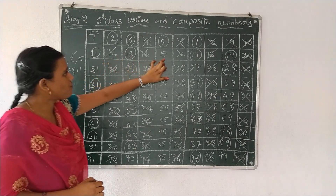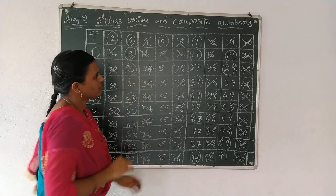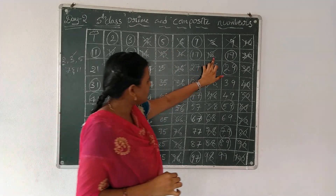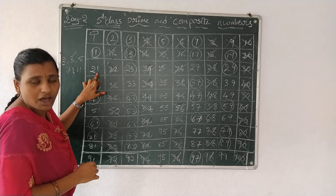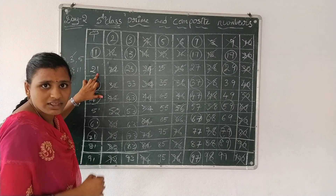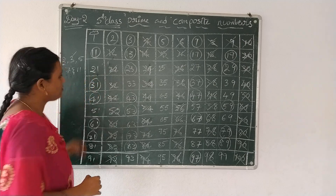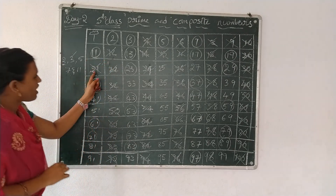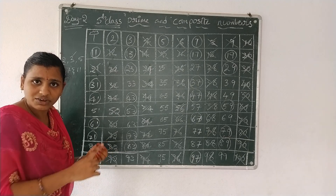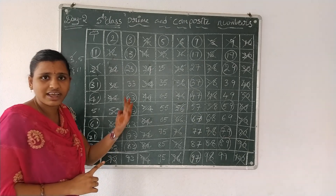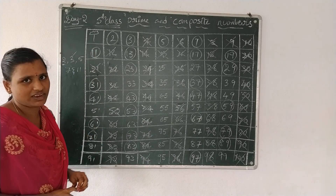12, 15. 15 is a composite number, so cross it. 18, 21. 21 is a composite number. What are the factors of 21? 1, 3, 7, 21. It has 4 factors, so 21 is a composite number.